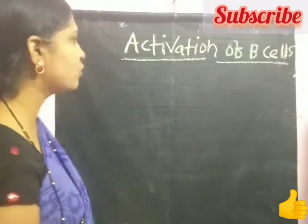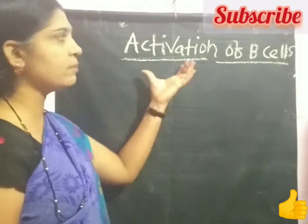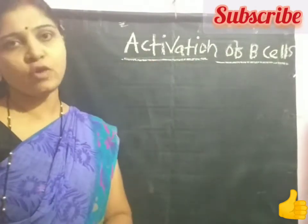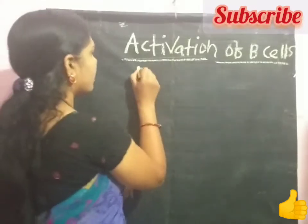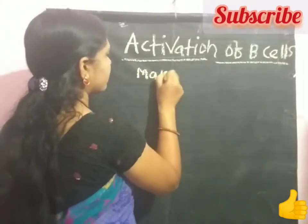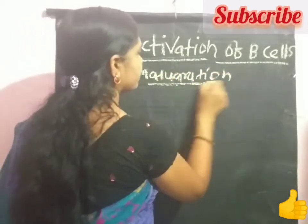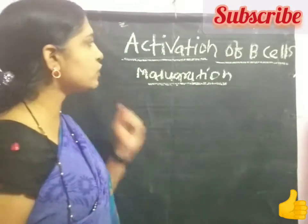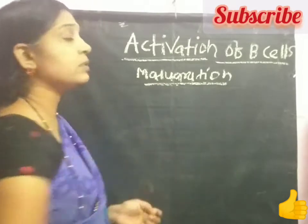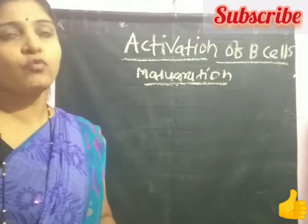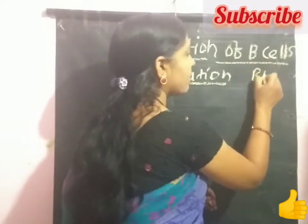Hello friends, today we are discussing the next point about B cells, that is the activation of B cells. Previously we already discussed the different maturation stages of B cells. Now we switch over to the activation of B cells. The initial maturation of B cells is carried out within the primary lymphoid organ, that is the bone marrow, which we have already discussed.